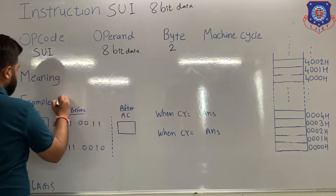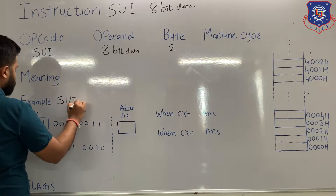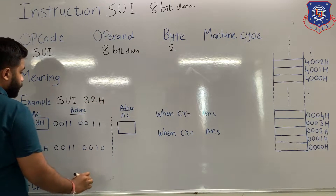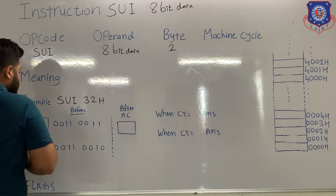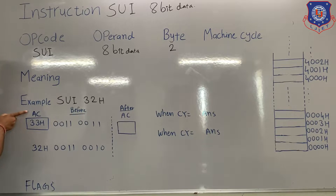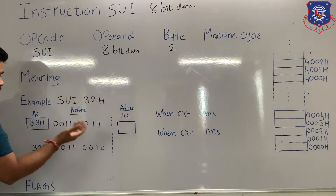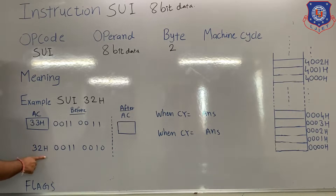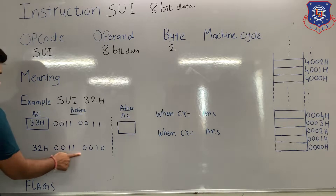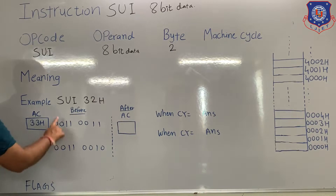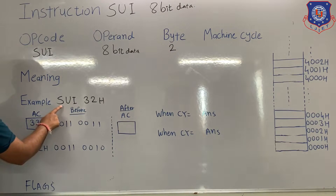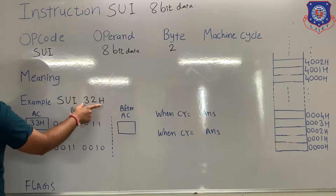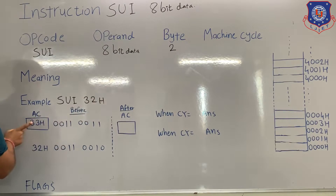Let's see one example. Suppose the example is SUI 32H. Before the execution, the content of the accumulator is 33H in hexadecimal. If you convert this number into binary, you will get the corresponding binary value. The 32H is also represented in binary. The meaning of SUI 32H is: subtract immediate 32H from the accumulator and the answer will be stored in the accumulator.